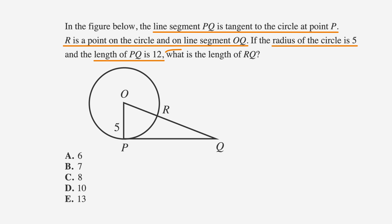Let's underline the facts, circle the keywords, and label the answer choices. Because PQ is tangent to the circle, we know that OPQ is a right triangle. In order to find RQ, we need to first use the Pythagorean theorem to find OQ.